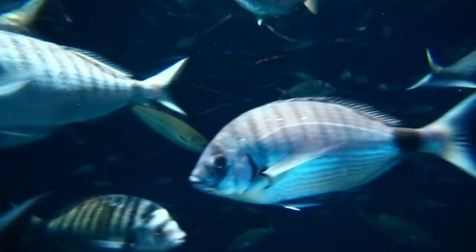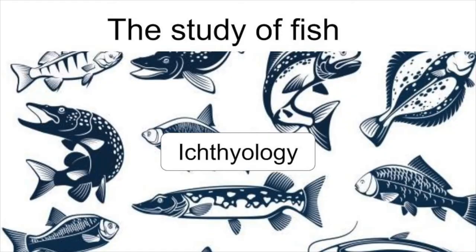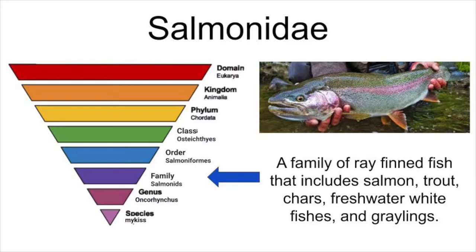Before we get started learning about the life cycle of the rainbow trout, let's first cover the basics. First of all, the study of fish is called ichthyology. Therefore, someone that studies fish is called an ichthyologist. Scientists like to classify things using the following pyramid.